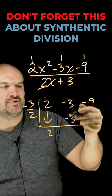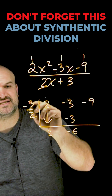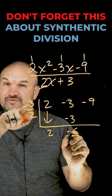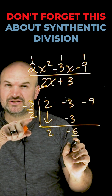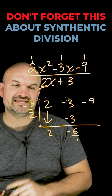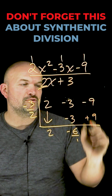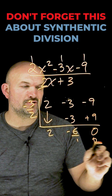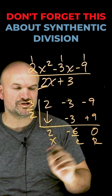Negative 3 plus negative 3 is going to be negative 6. Negative 6 times negative 3 halves: negative 6 times negative 3 is positive 18, and 2 times 1 is 2, so positive 18 divided by 2 is positive 9. The remainder is going to be 0. That is my remainder, my constant, and my linear term.